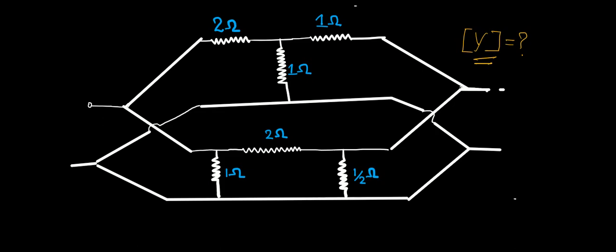If you observe carefully, you will get to know that this circuit is a T network and this circuit is a pi network which is connected in parallel fashion. Parallel combination of T and pi.